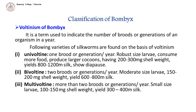Multivoltine: organisms having more than two broods or generations per year. Their larvae are comparatively of small size. Shell weight of the cocoon is 100 to 150 mg. They yield 300 to 400 meters of silk.